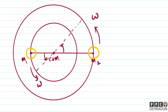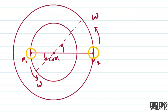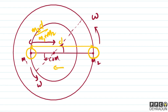Let's assume the distance between m1 and m2 is d. If this distance is d, then the distance between center of mass and m1 will be m2·d/(m1+m2). Similarly, the distance between center of mass and m2 will be m1·d/(m1+m2).